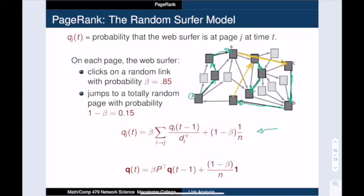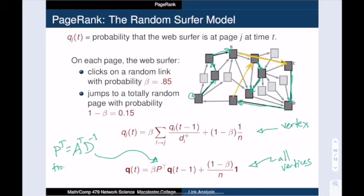This update rule is used for every vertex J, so it's convenient to write this in a matrix form where we can talk about all the vertices simultaneously. And in this case, we can see the transition matrix. And that's just equal to P transpose is going to be A transpose D inverse, and this is the transition matrix that we saw when we talked about random walks on networks.